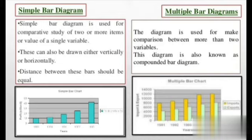Now this is the difference between both simple and multiple bar diagram. Simple bar diagram is used for comparative study of two or more items or values of a single variable. These can also be drawn either vertically or horizontally. Distance between these bars should be equal, as you can see in this picture also.